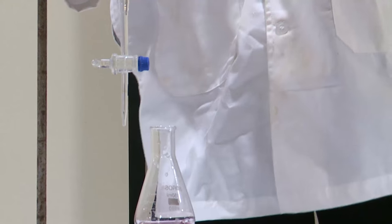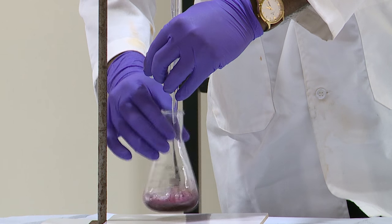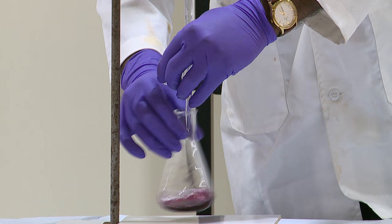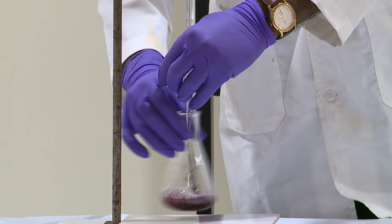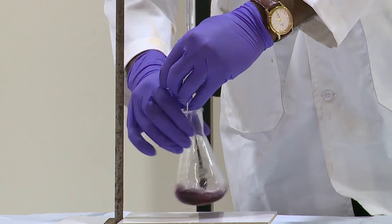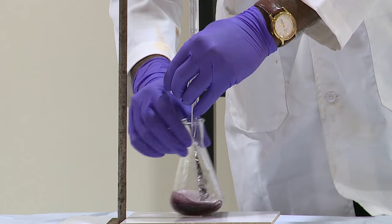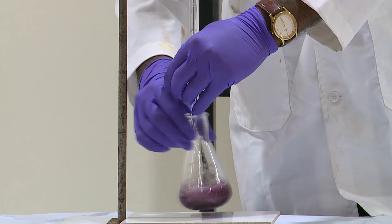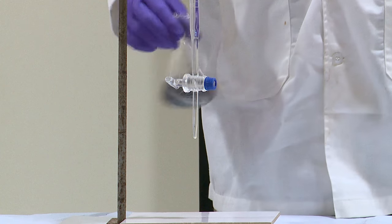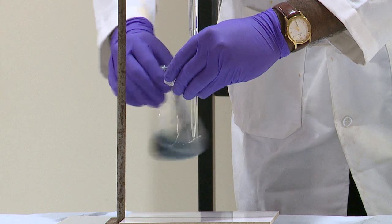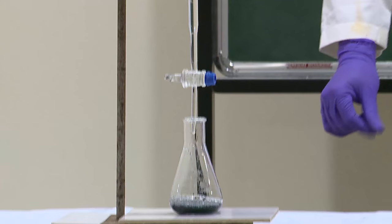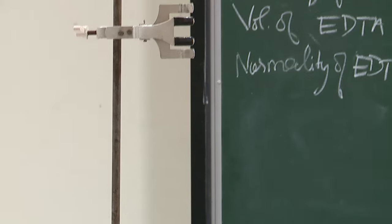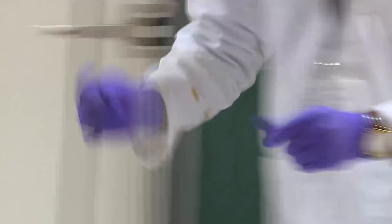Fill the burette with EDTA and start the titration. When you add the EDTA, the free metal ions complex with EDTA, and also the metals bound with EBT will be taken by EDTA. At last, when all the EBT is free from metal ions, you will see the color change. You have now got the color change — it is steel blue — this is the end point. Note down the value: the reading is 10.1 ml.